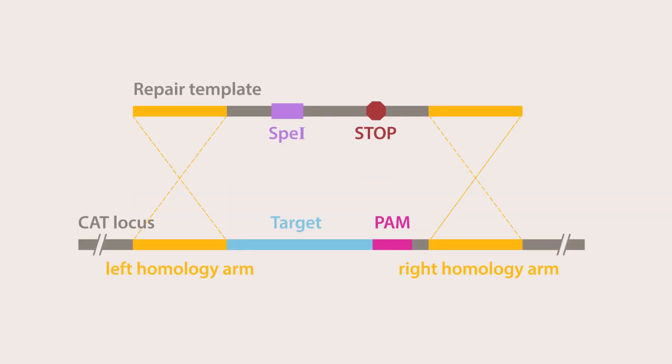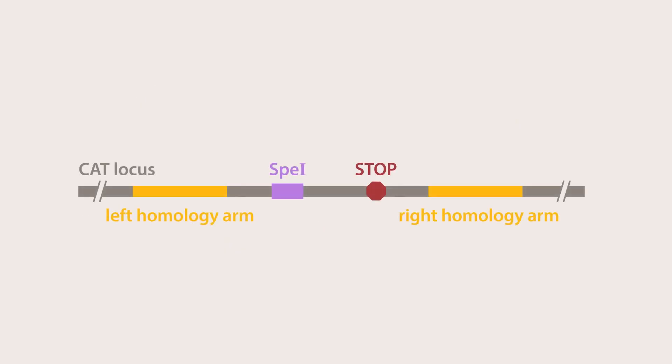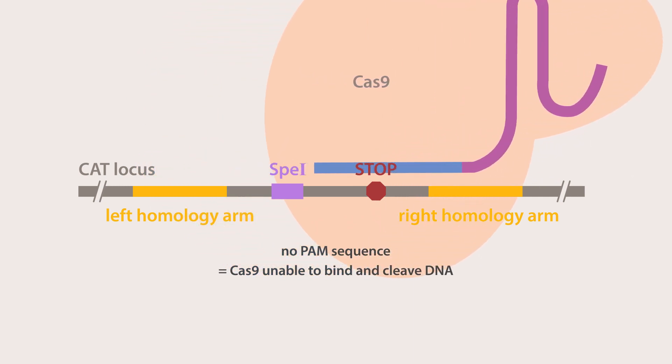Most importantly, upon recombination, the repair template eliminates the PAM site, thereby preventing Cas9 from targeting and cleaving edited cells.